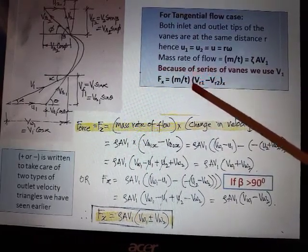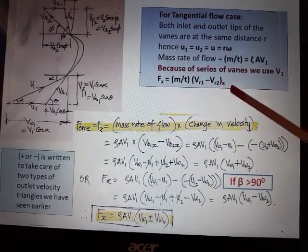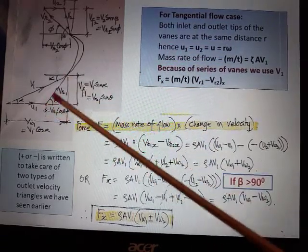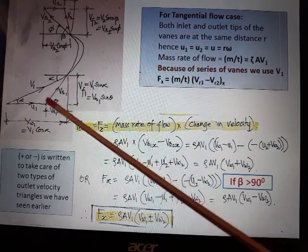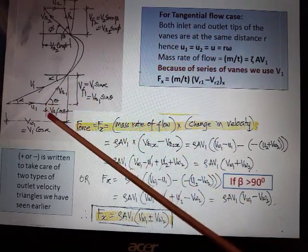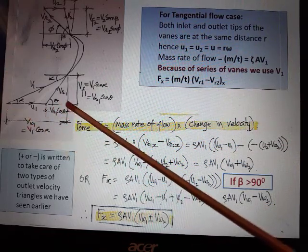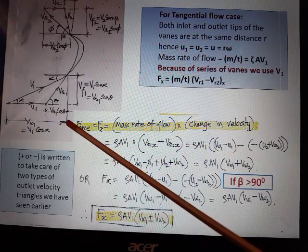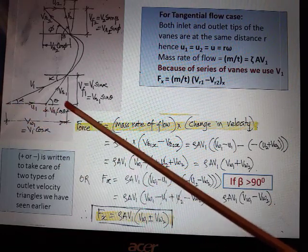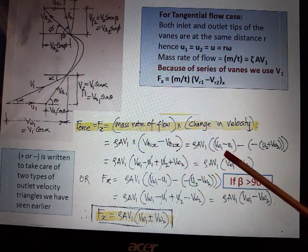Now the only question is we have to deal with this Vr1x minus Vr2x. In inlet velocity triangle, Vr1x is in this direction, so Vr1x component is this - you can just see here it is Vr1*cos(θ), or it can be this whole distance that is Vw1 velocity of whirl minus u1. So Vr1x is substituted as Vw1 minus u1.